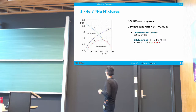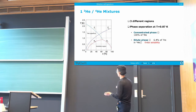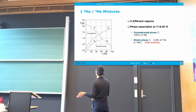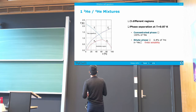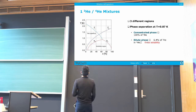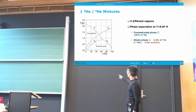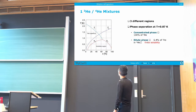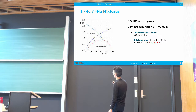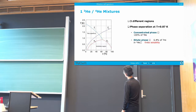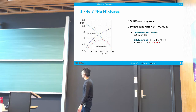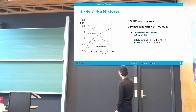Now let us go to the mixture of helium-3 and helium-4. In this graph, the physics essence of the capability of these systems to reach the millikelvin range is hidden. We plot temperature on the y-axis and the concentration of helium-3 on the x-axis. Starting at around 2.5 Kelvin and cooling down, we cross the lambda line, which divides the superfluid phase from the normal phase — helium-4 turns into the inert superfluid. Then we keep cooling until we reach 0.87 Kelvin, where we have a phase separation in this mixture.